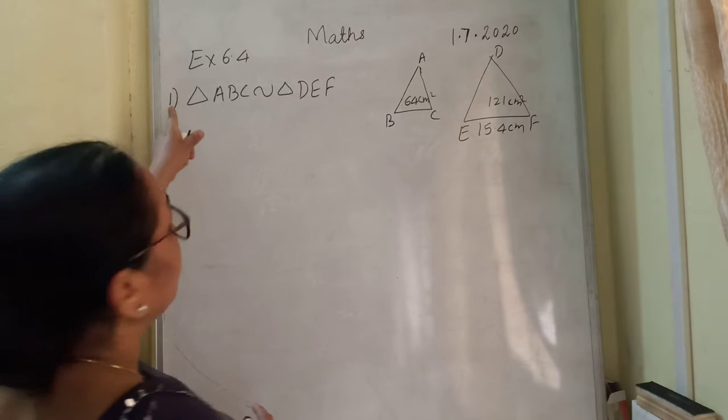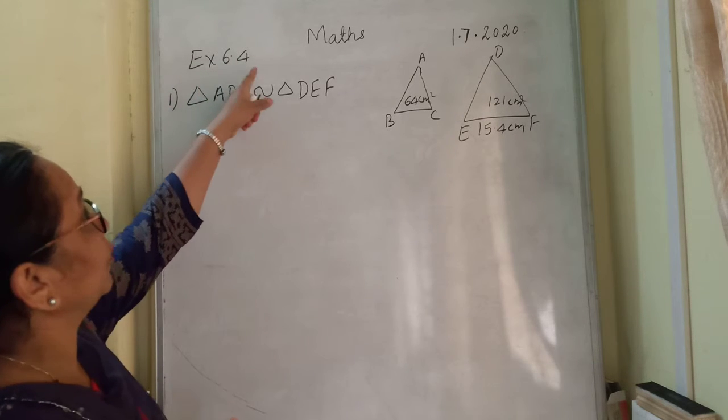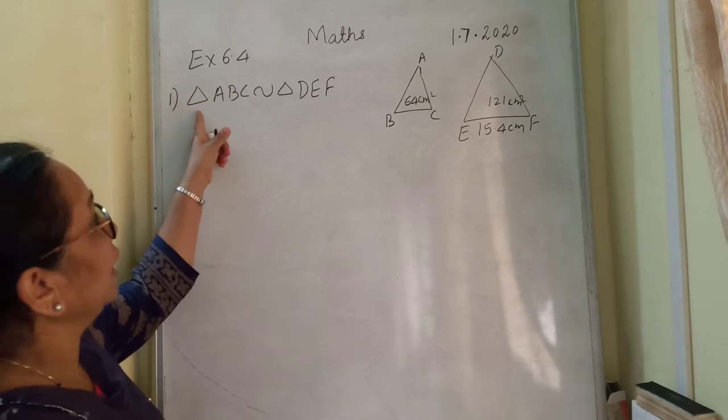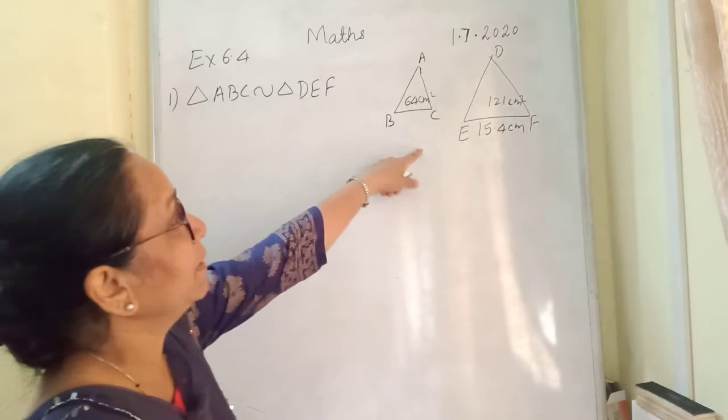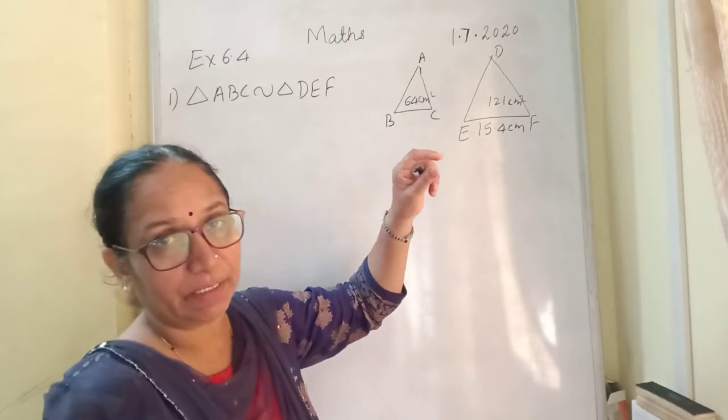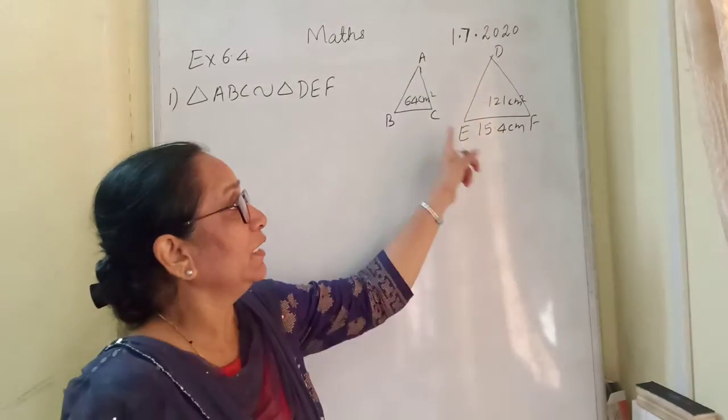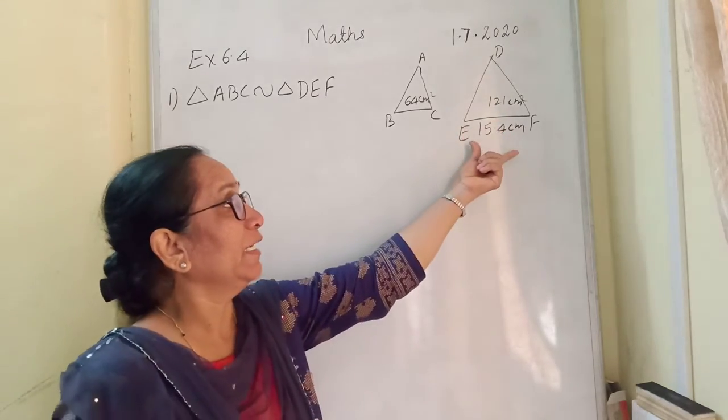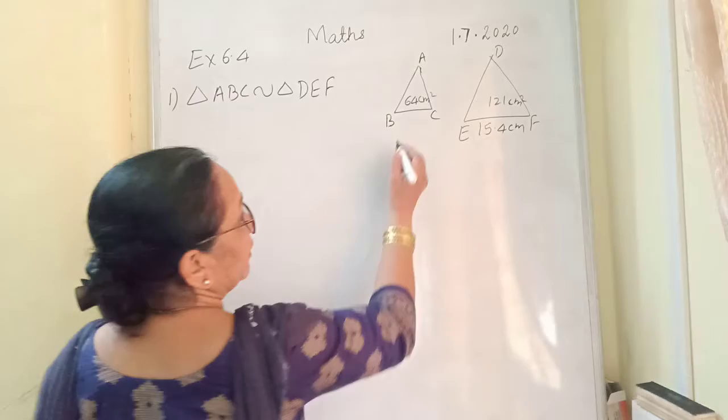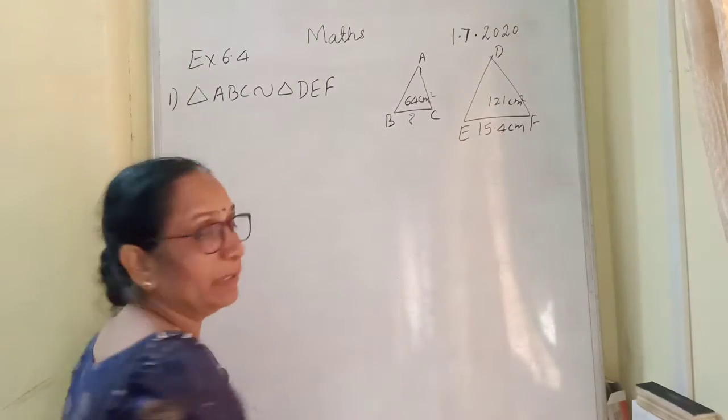Now students, question number 1 from exercise 6.4. Given is triangle ABC is similar with triangle DEF. Area triangle ABC is equal to 64 cm square, area triangle DEF is equal to 121 cm square. Here it is given that EF is equal to 15.4 cm, we have to find BC.